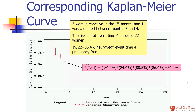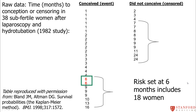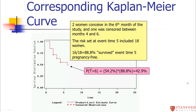At six months, the risk set is 18 women, so 88.8% survived this next interval pregnancy-free. We drop the curve down to 42.9% — that's your probability of surviving past six months pregnancy-free in this study.